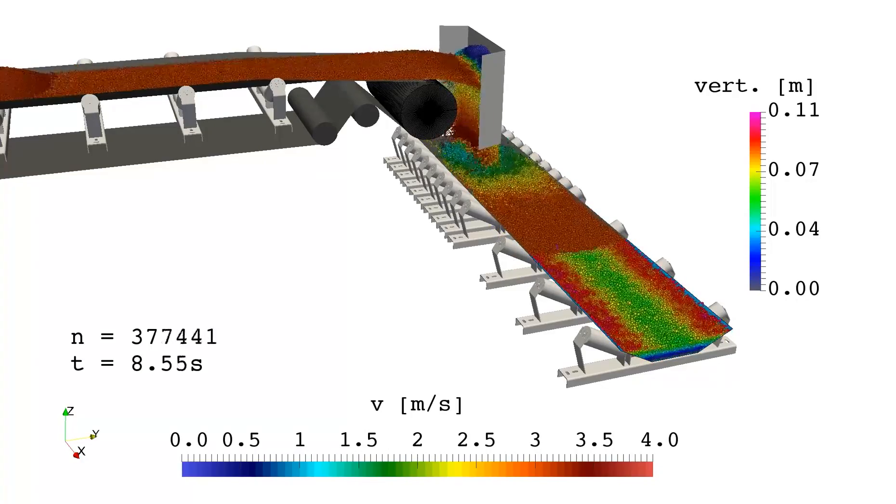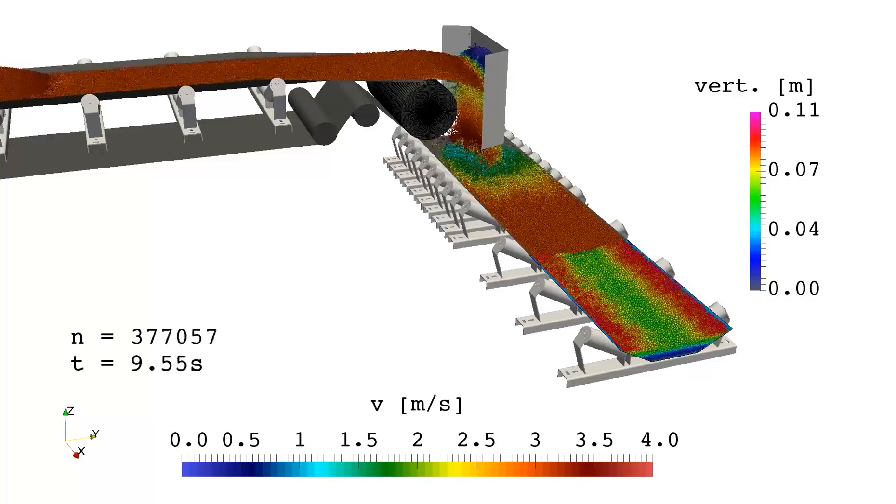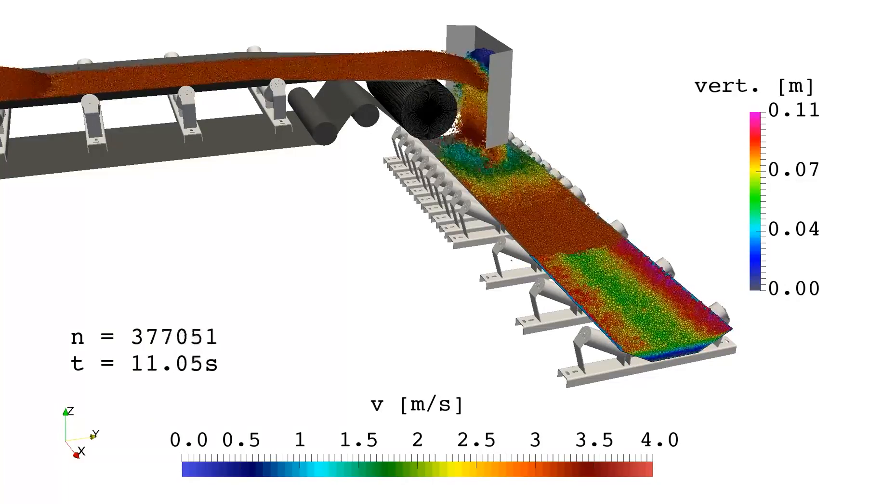In this section the bulk material is not colored by velocity but by its vertical position. Particles with a higher altitude are colored in red and pink.